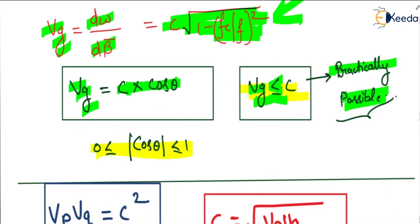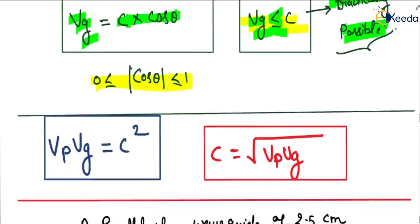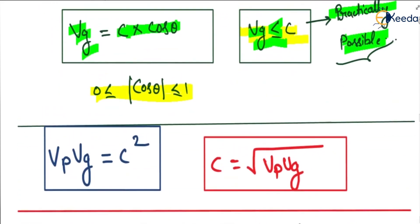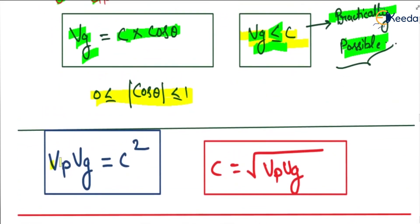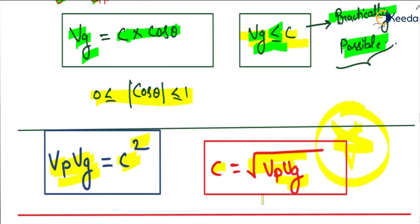When we take the product of phase velocity and group velocity, vp times vg equals c squared. So c equals the square root of vp times vg. This is also an important result, and some numerical problems have come in examinations from this relationship.